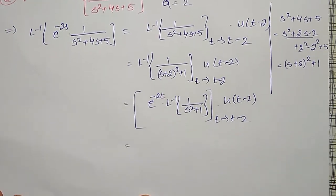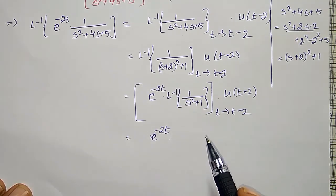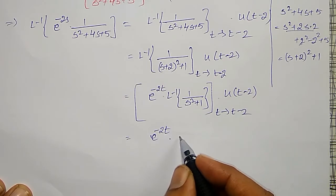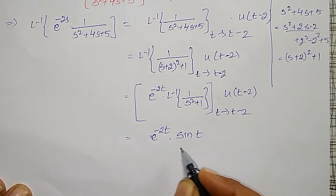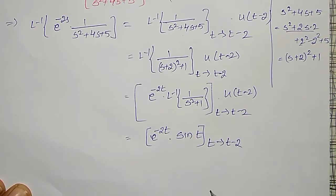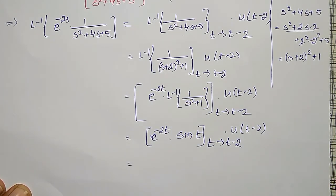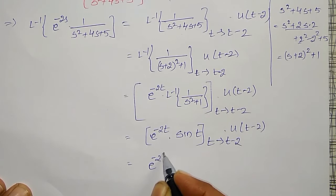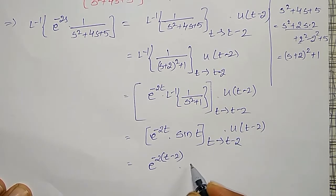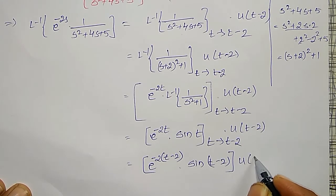I can write it as e to the power minus 2t into the inverse Laplace Transform of 1 divided by s squared plus 1. Now, 1 divided by s squared plus 1 is sin(t) — that is, with coefficient 1 equal to 1, it gives sin(t). In this, t is replaced by t minus 2, into u(t minus 2). Replacing t by t minus 2, I get: e to the power minus 2(t minus 2) into sin(t minus 2) into u(t minus 2). This is my required answer.